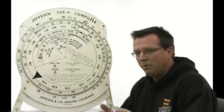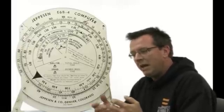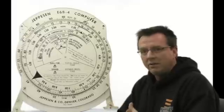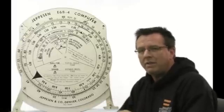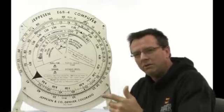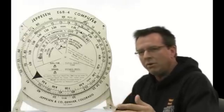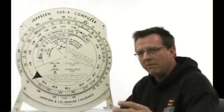But when you go to your checkride, you want to be good with it because he may have you do something like, he'll say, well hey, you know, your cross country planning looks good, but I think I want to go somewhere else now. Just go ahead and pull out your E6B and figure what the change is going to be in the time and the amount of fuel that we're going to need.